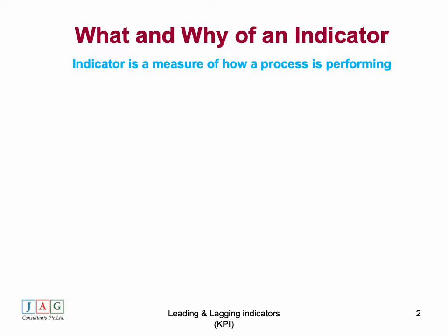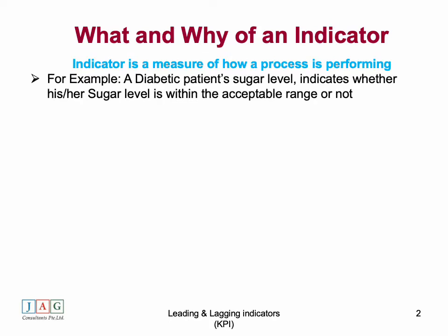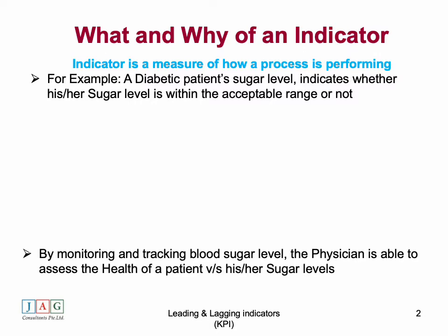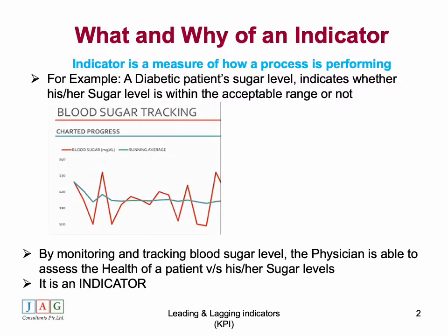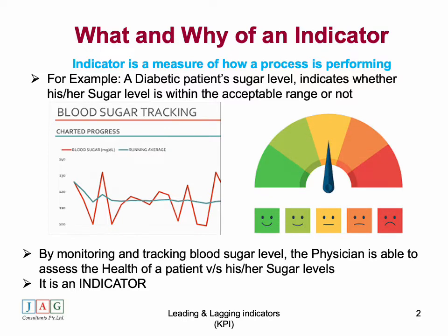What exactly is an indicator? It's a measure of how a process is performing. For example, take a diabetic patient's sugar level monitoring — monitoring the sugar level regularly to see whether they are in the acceptable range or not. By monitoring and tracking the blood sugar level, the physician is in a position to assess the health of the patient. The sugar level being monitored is an indicator — it indicates the health of a patient.